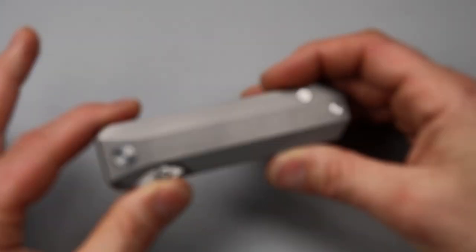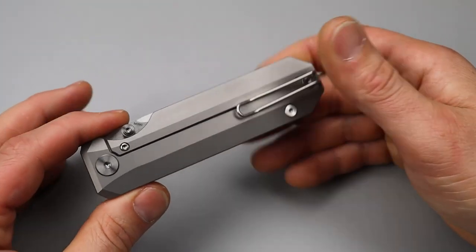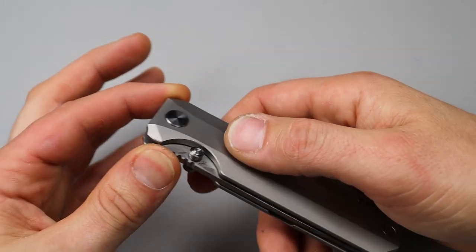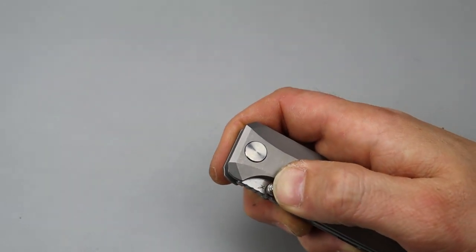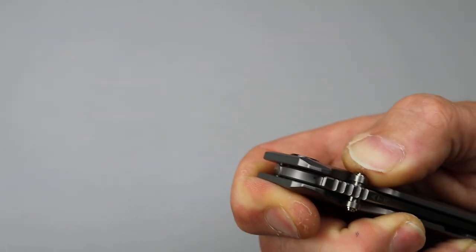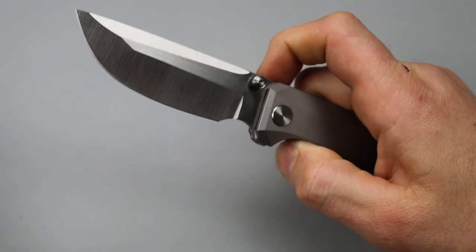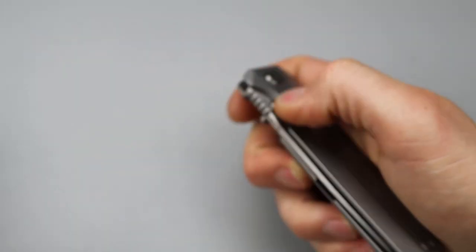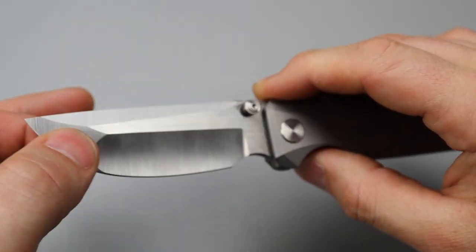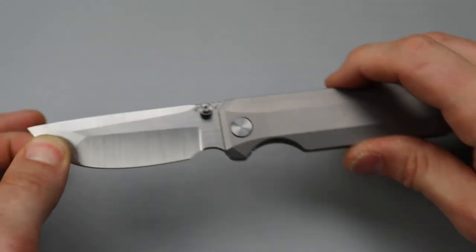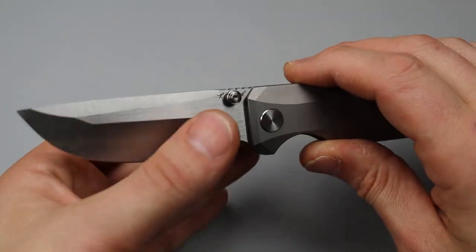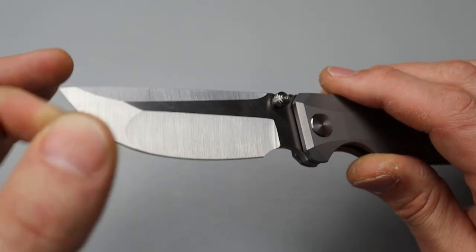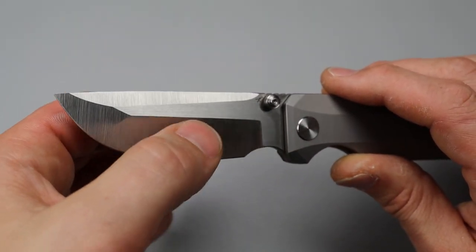Let's crank it open as we're getting through this stuff. We have a hand-ground Magnacut blade. By the way, Bestech is the OEM. So we have a hand-ground dual-ground Magnacut blade, super thin behind the edge right here, nice hollow grind right here, flat grind up here.